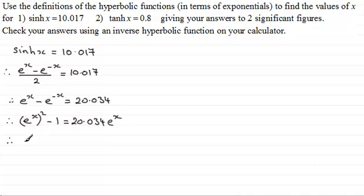So I'm going to rearrange it. We'll have e to the power x squared. I'll subtract this term from both sides so we now have minus 20.034 e to the power x and then minus 1 and that equals 0. Now at this point we need to use the quadratic equation formula for doing something like this where a is 1, b is minus 20.034 and c is minus 1. So that's going to give us the value of e to the x.